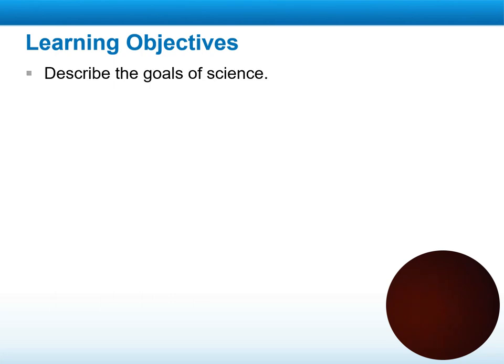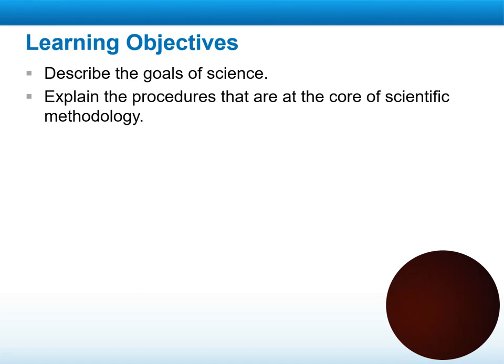We will start with the learning objectives. We will start by describing the goal of science, then explain the procedures that are the core of scientific methodology. Methodology means the methods of doing any process — whether you want to make a cake, go for a drive, or buy something — you go through a process that needs a method. Then we will define the scientific theory: what it is, the difference between theory, states, or facts, and whether we need to go through an experiment to prove a theory is correct or not.